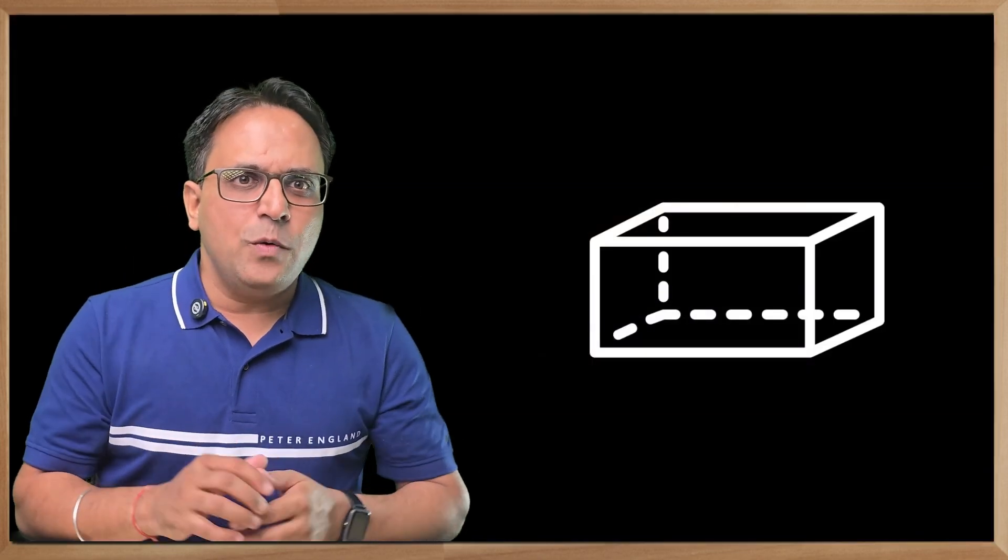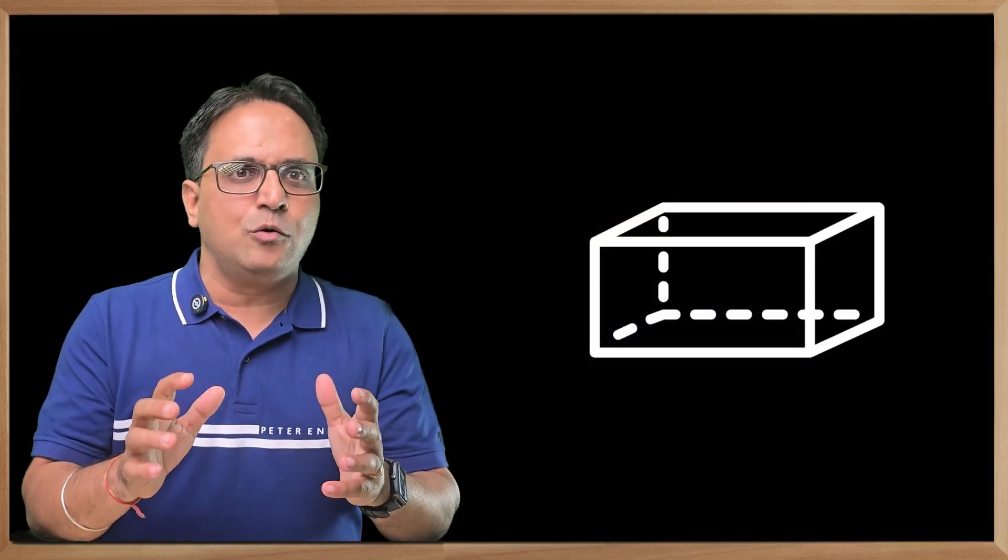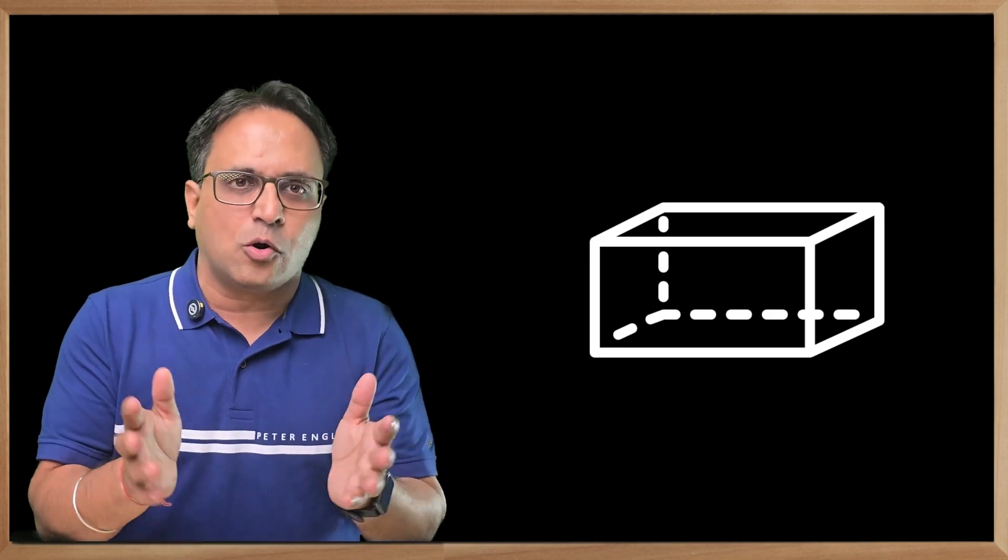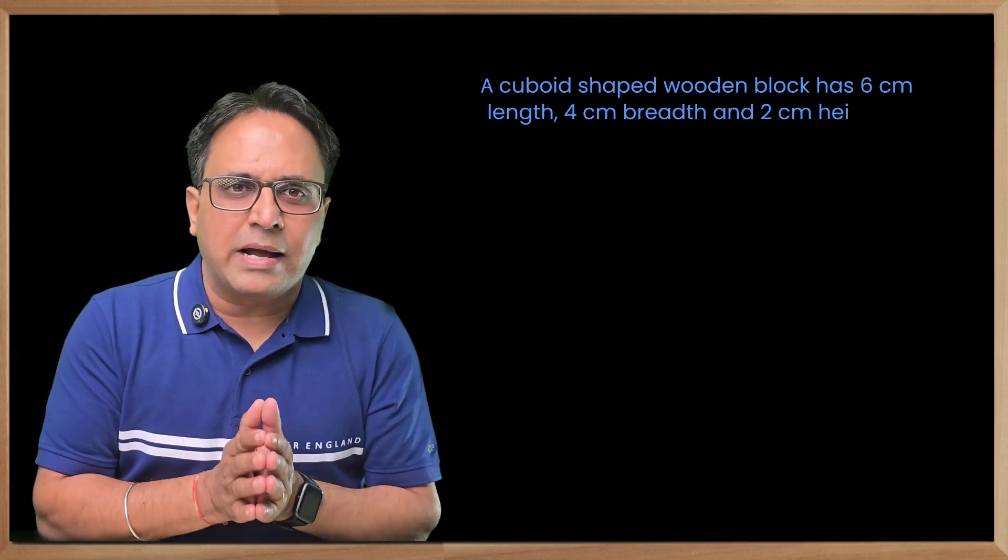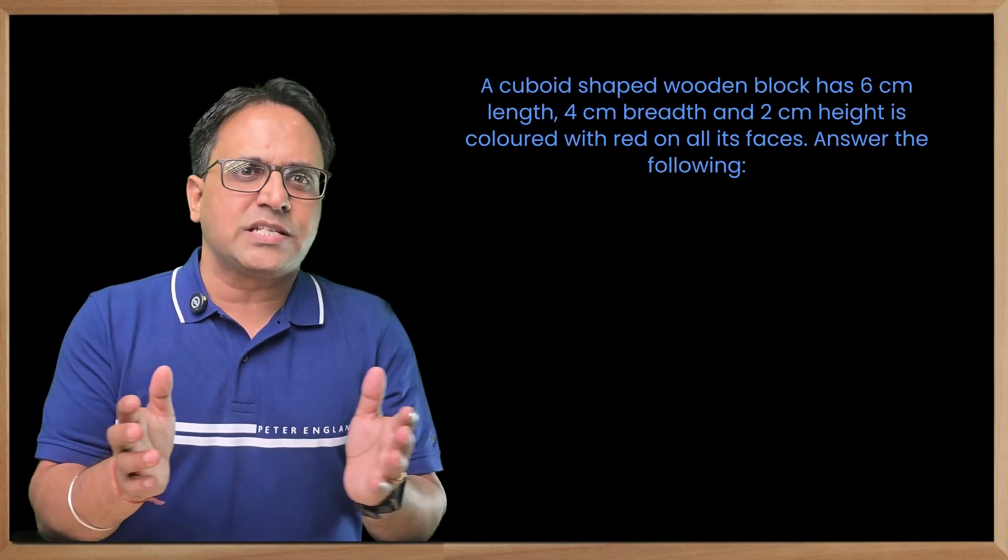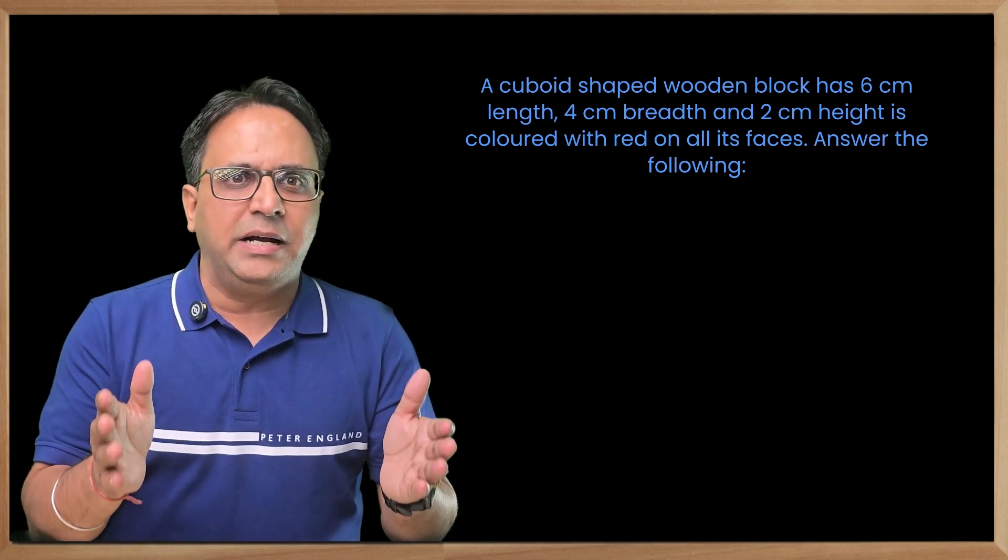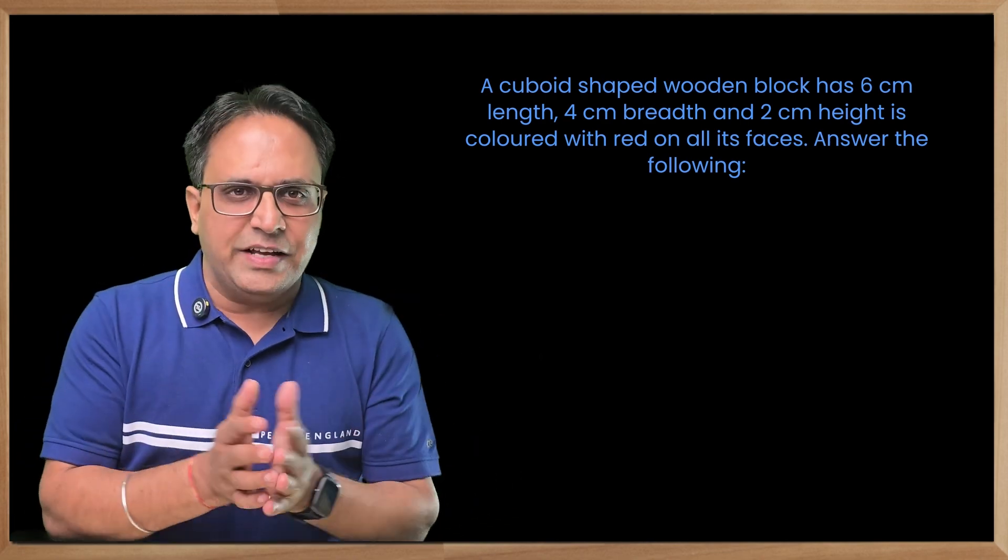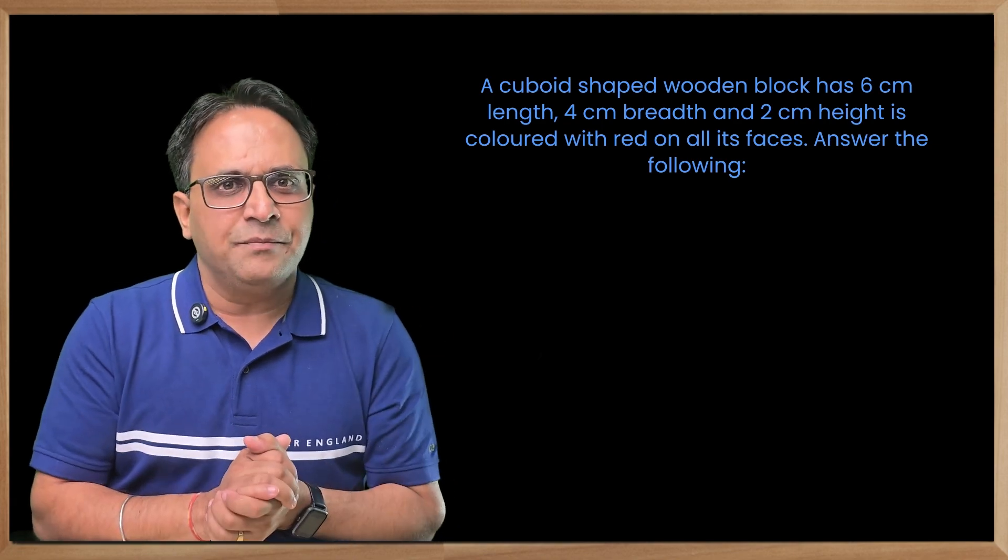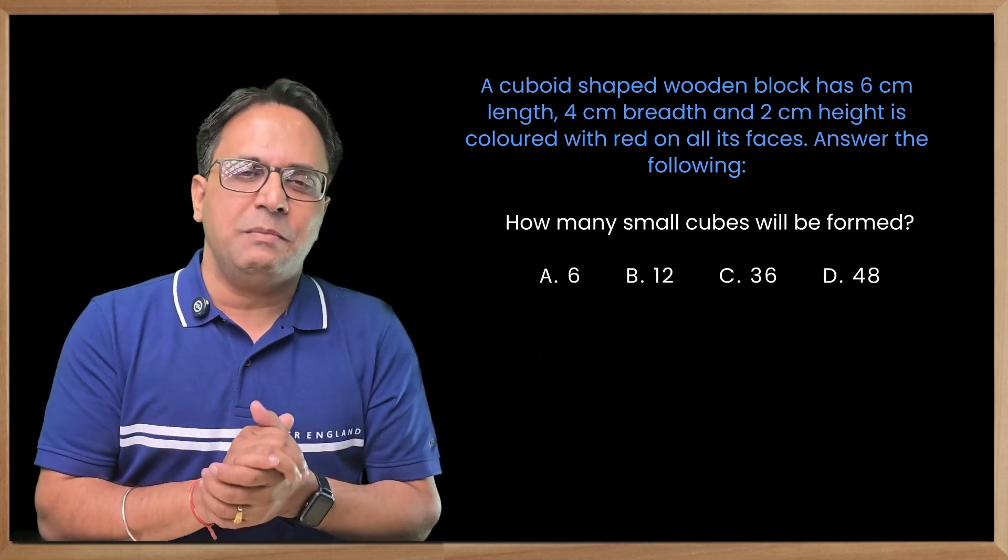Now when the question comes where a cuboid is colored and cut into smaller cubes, our calculation follows accordingly. Let's take a look at one such question: A cuboid shaped wooden block has 6 cm length, 4 cm breadth, and 2 cm height, colored with red on all its faces. Answer the following: How many small cubes will be formed?